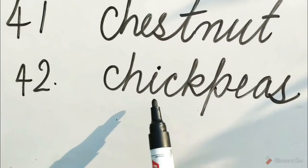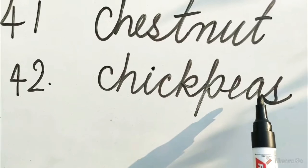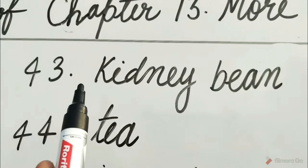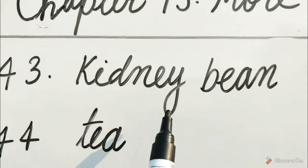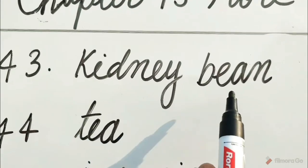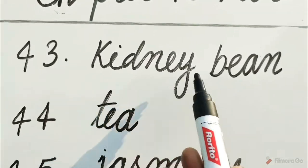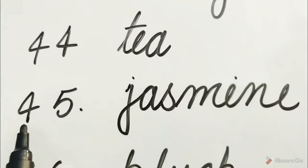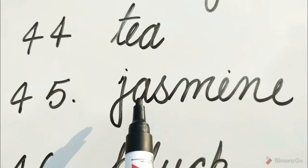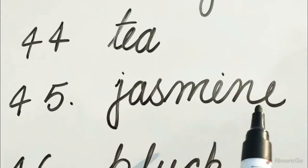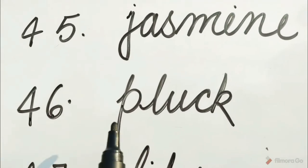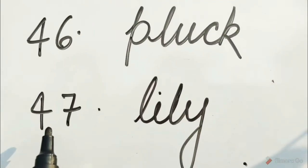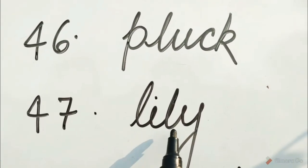Number 43: K-I-D-N-E-Y B-E-A-N, kidney bean. Number 44: T-E-A-T. Number 45: J-A-S-M-I-N-E, jasmine. Number 46: P-L-U-C-K, pluck. Number 47: L-I-L-Y, lily. Number 48: A-C-A-C-I-A, acacia.